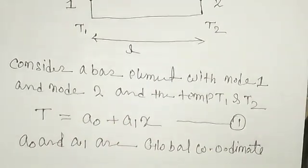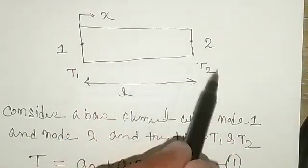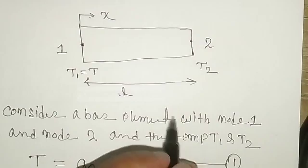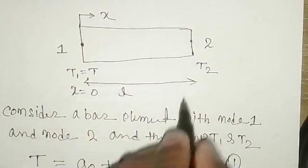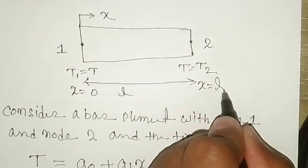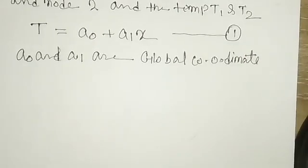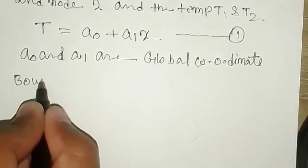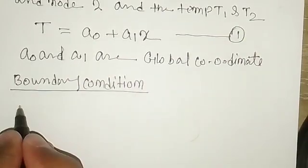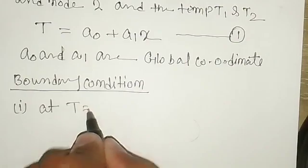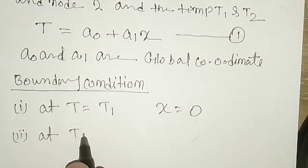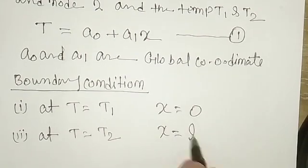First, we impose the boundary conditions on this bar element. At node 1, T equals T1 and x equals 0. At node 2, T equals T2 and x equals L. So these are the two boundary conditions we consider.